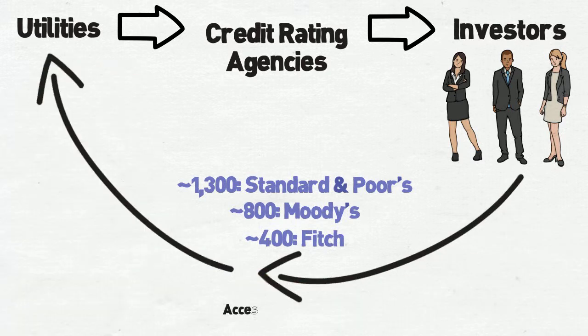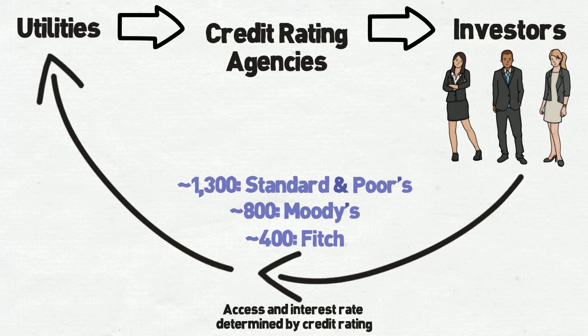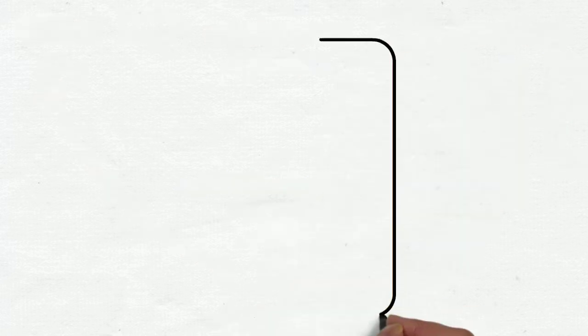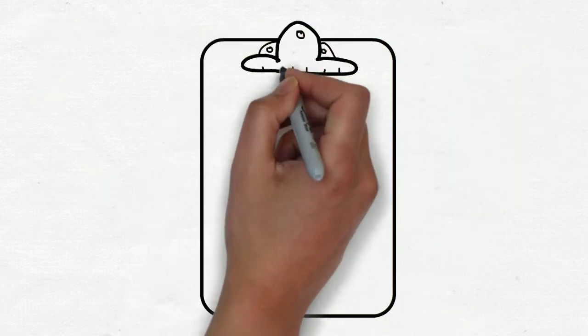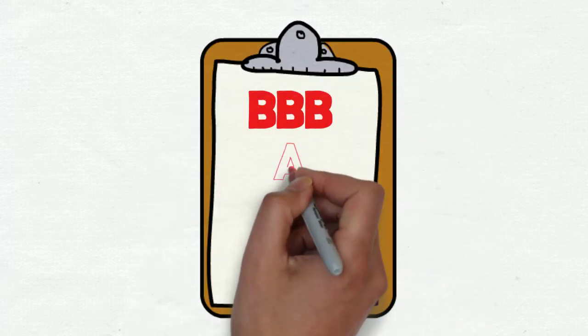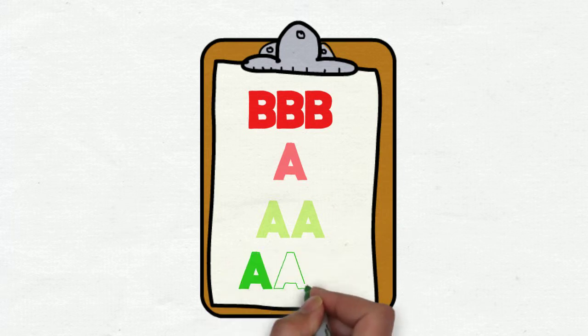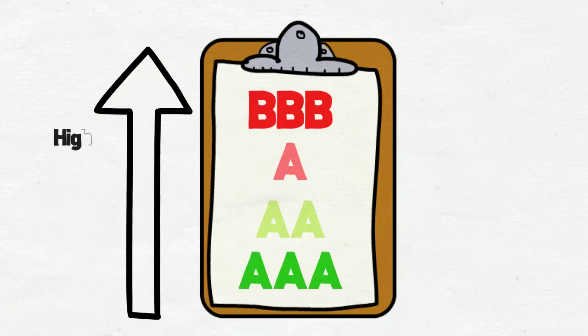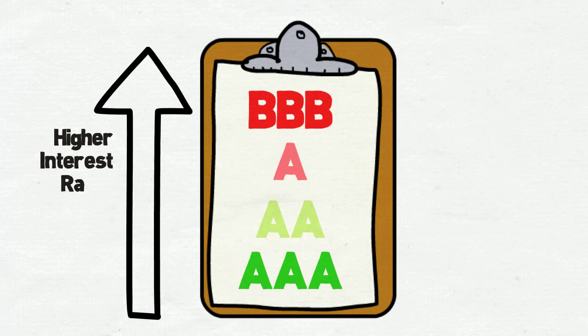Credit ratings play an important role in determining a water utility's access to and cost of borrowing money. Credit ratings are used by potential investors and lenders as an indication of the utility's ability and willingness to repay its debt on time and in full. Although each rating agency has a slightly different rating scale, in general they are similar to ones used in grade schools. A's are good, more A's are better. The better the rating, the lower the interest rate, and a lower interest rate can lead to substantial cost savings on bond repayments.